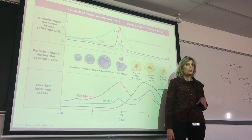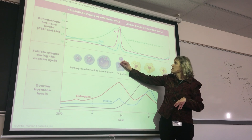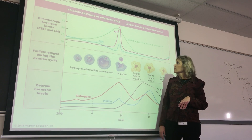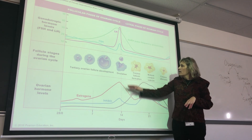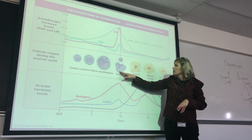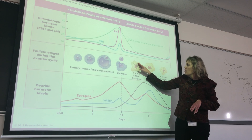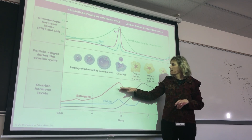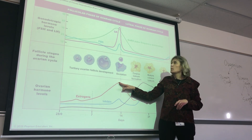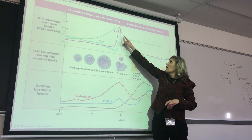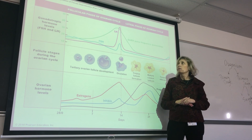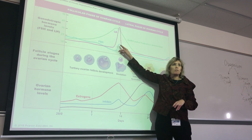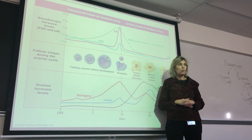Now luteinizing hormone gets released, and that causes ovulation. The tertiary follicle becomes the corpus luteum. Also at ovulation, the estrogen levels are going to be at their peak, luteinizing hormone is at its peak, and FSH is at its peak. They're all at the peak at ovulation.